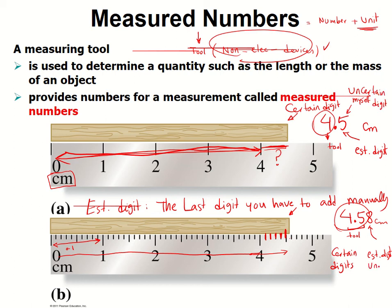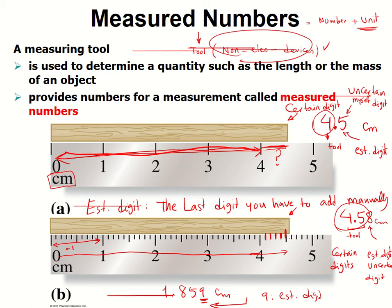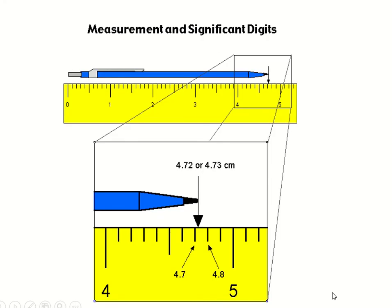For example, on your exam you may see a question like this: 1.859 centimeters — what is the estimated digit? You just need to look at the last digit. The last digit, nine, is the estimated digit.